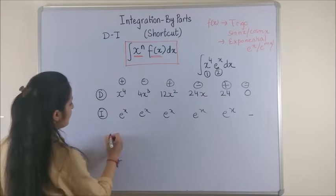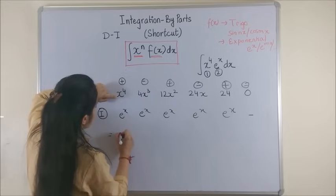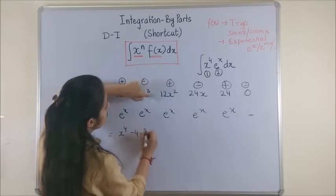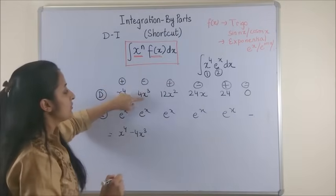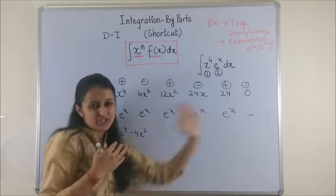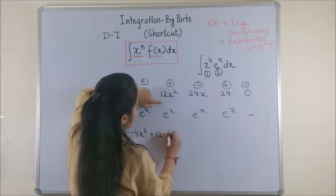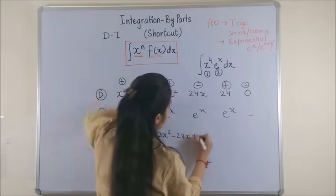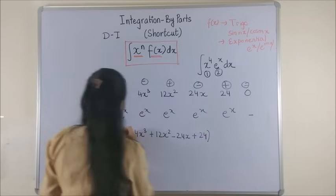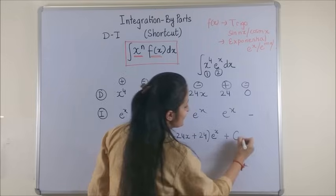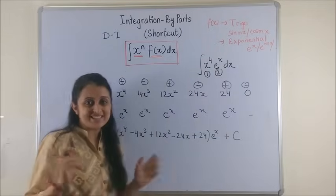Now once again multiply these. So this would be x raised to the power 4, this is minus 4x cube. Of course every time we are doing, into e to the power x, let's just take it common. Plus 12x square minus 24x plus 24 into e to the power x and don't forget to write your c. Wasn't that easy?